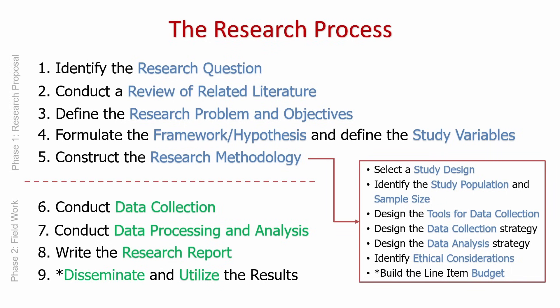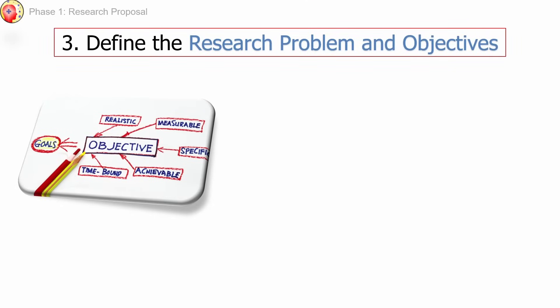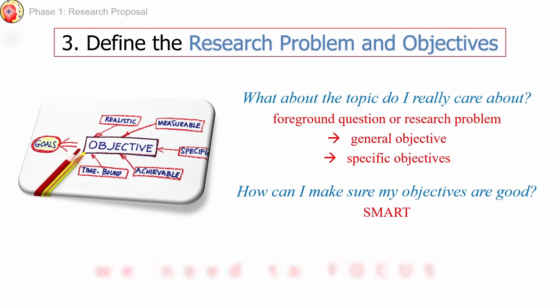After your initial review of related literature, the next step is formulating your research problem and objectives. We already have our background question or general topic, but it is still very broad. In research, we need to focus. It is impossible to answer everything, but we can probably answer something. This focusing is called defining the research problem and objectives. This step is arguably the most important step in the entire process — it anchors the entire research into what is important and what is not. Everything you do after this step will be rooted in what you write here.